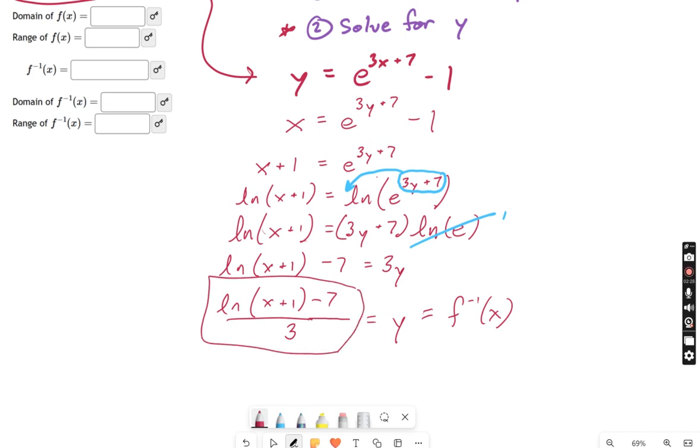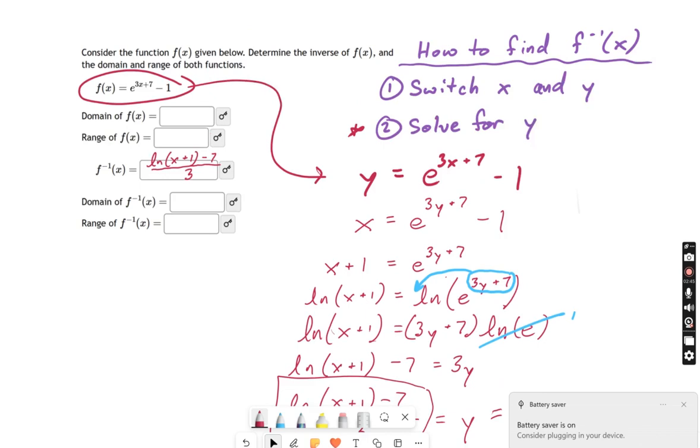You can take this and put this over in this box up here, where it's asking you what is the inverse, and so on. So I'm going to say the inverse is the natural log of x plus 1 minus 7, all divided by 3. Okay, so that's the major part of this problem.